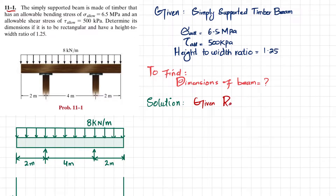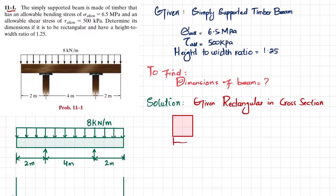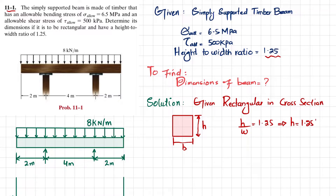The cross-section is rectangular. If we draw the rectangular section, the width is represented as b and the height as h. The height-to-width ratio is given as 1.25, so from this we get h equal to 1.25 times b. We will use b instead of w, so h equals 1.25b.